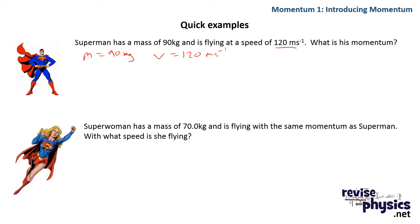Well, p equals mv, which equals 120 times 90 - our velocity times our mass. Type that into our calculator and we get a momentum for Superman of 10,800 kilogram meters per second.